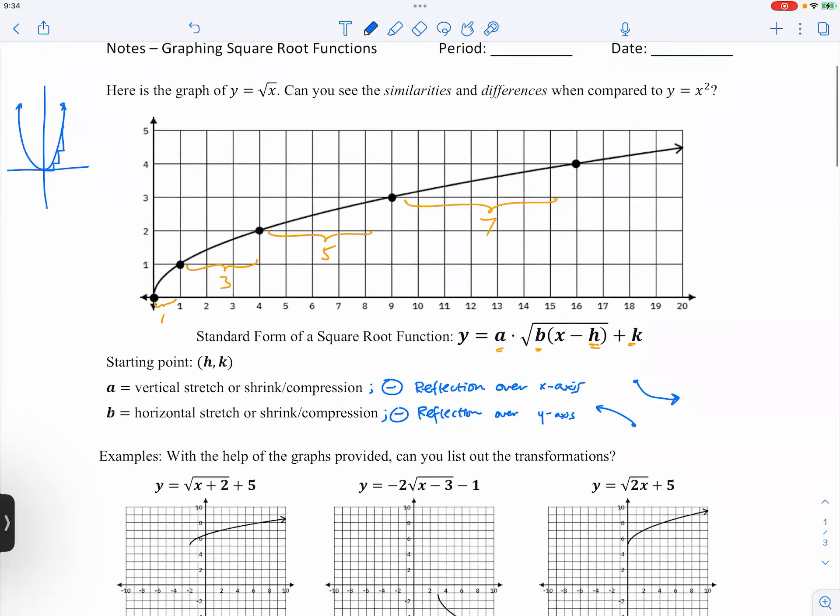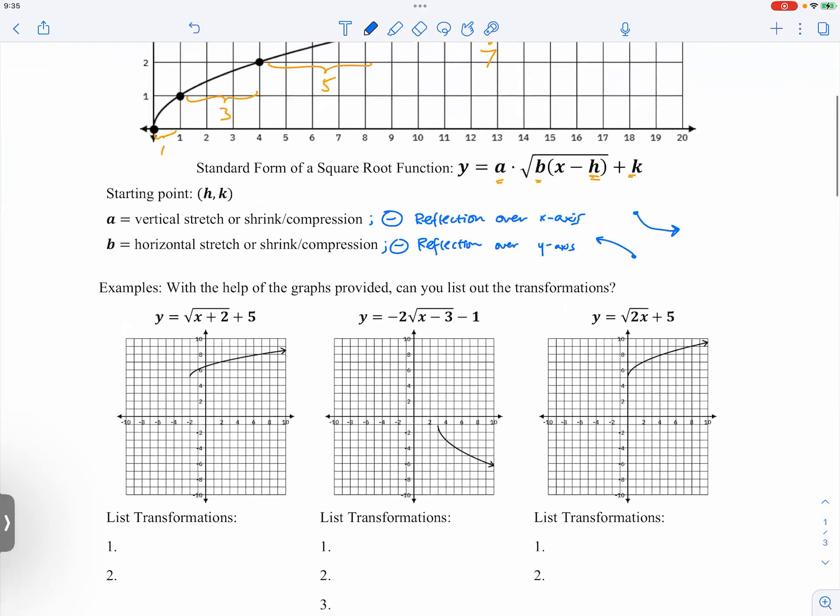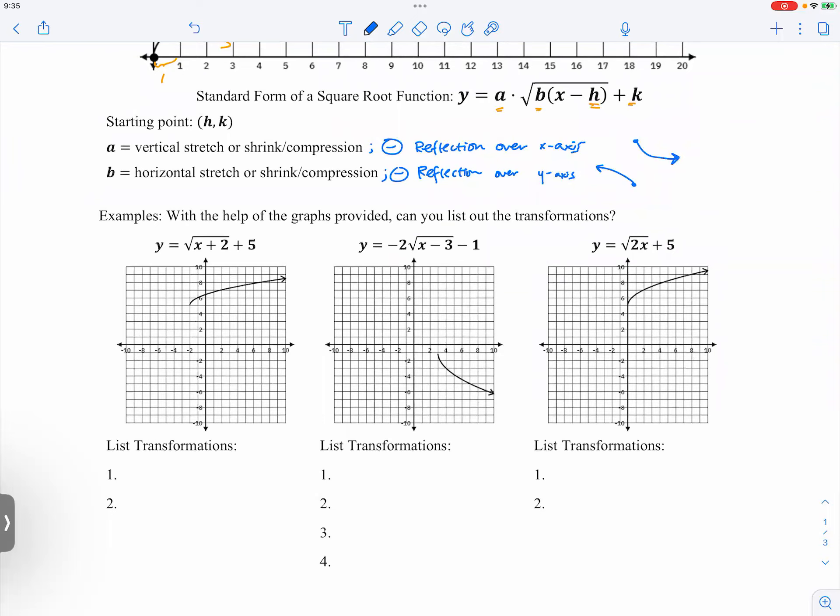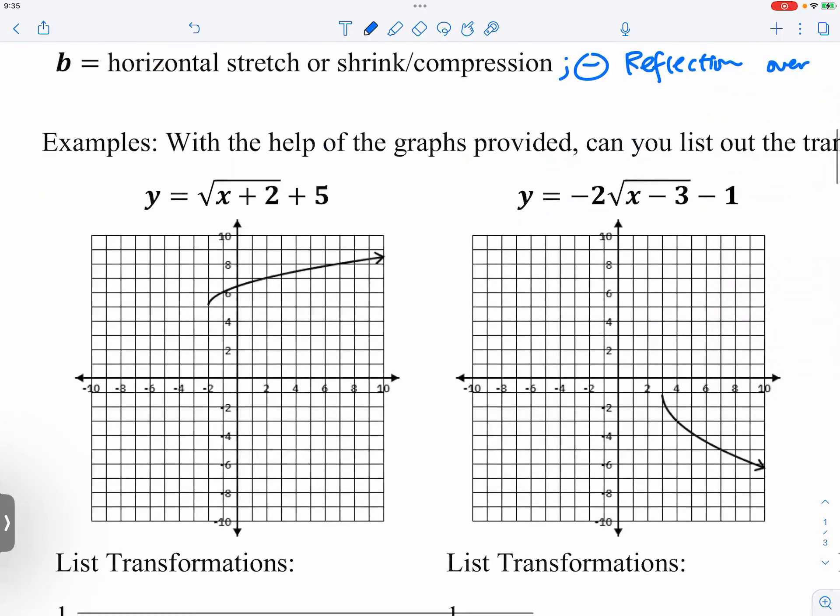So now, with the understanding of these transformations just like what we had before, you know the H and K, the starting point, moving left and right - that's really what H stands for. Up and down, and then you have stretching and shrinking. So now what we want to do is look at these equations and reduce the amount of guessing. I'm giving you the graph.